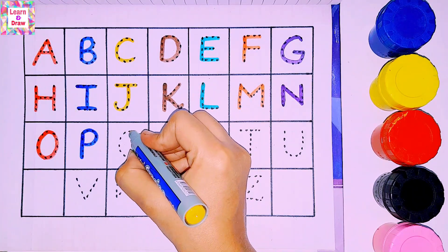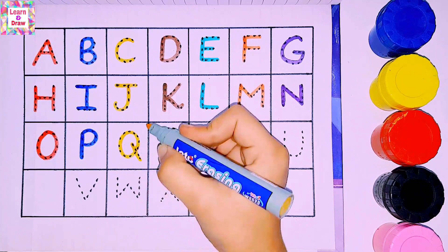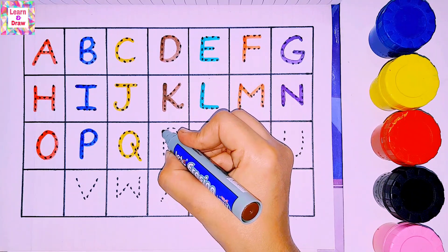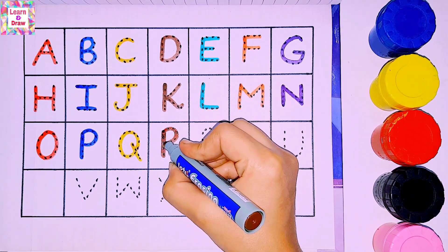Yellow color Q. Q for queen. Brown color R. R for rocket.